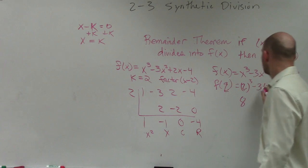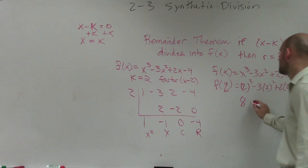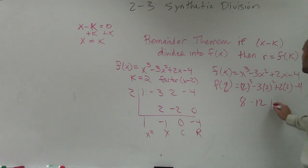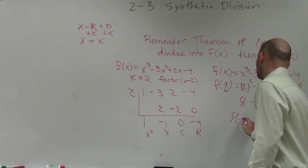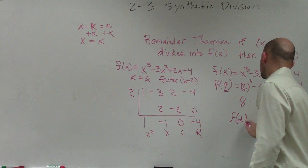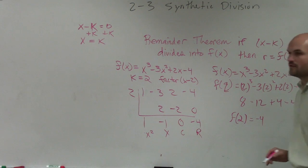Now let's go and see something. Two cubed is eight. Two squared is four. Four times three is negative twelve. Two times two is four, minus four. So when you add this all up, f of two equals negative four.